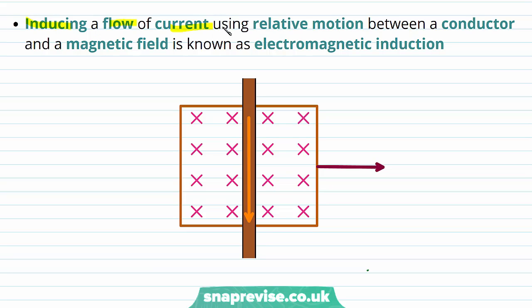Inducing a flow of current using relative motion between a conductor and a magnetic field is known as electromagnetic induction. This process is called electromagnetic induction, and this is how electricity is generated.